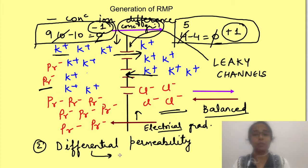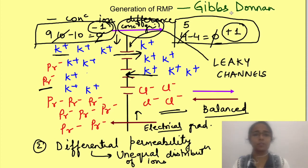This process of development of potential due to unequal distribution of ions when membrane is differentially permeable to ions is known as Gibbs-Donnan equilibrium, which we have discussed in another video in detail. I have given the link for this in description section below. Anyways, so till now we discussed two requirements for development of potential. There should be concentration difference of ions across two sides of membrane and the membrane should be selectively permeable to ions.